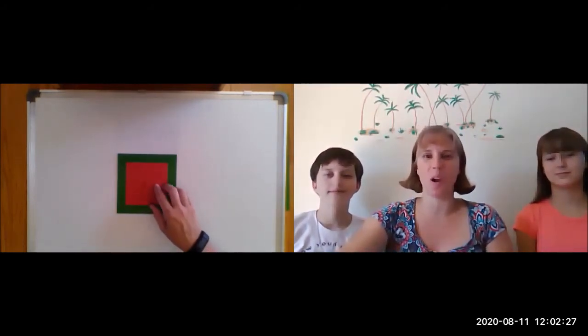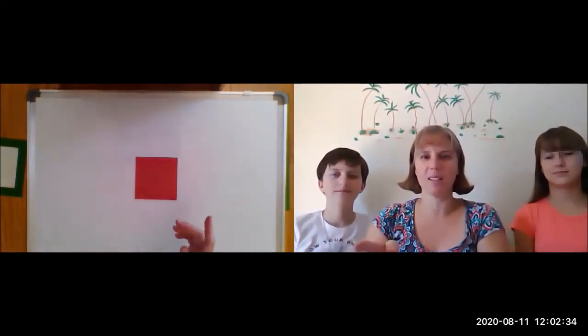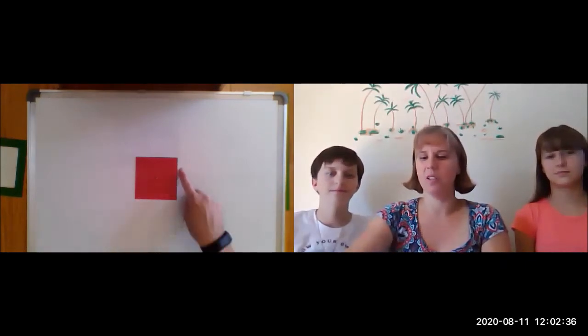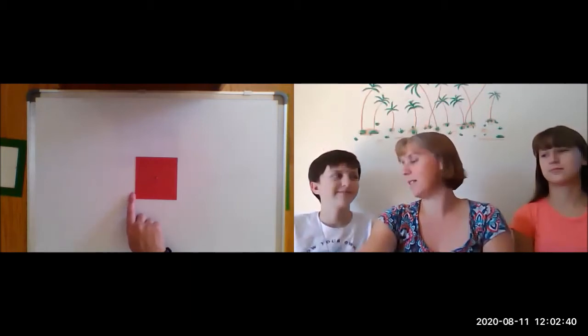Now this is another one of our metal inset materials, and this is the square. So I'm going to pull out the square and set the frame off to the side. And we know this is a square because it has one, two, three, four equal sides, and that's what makes a square.